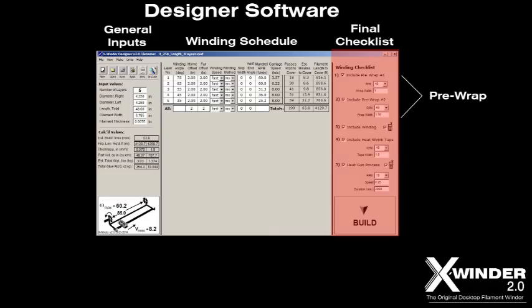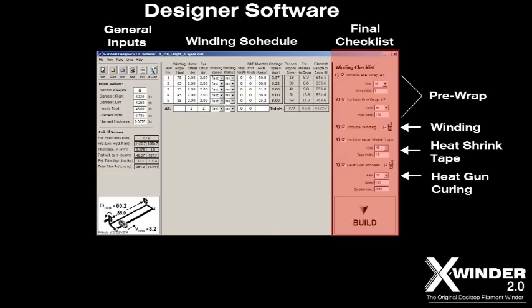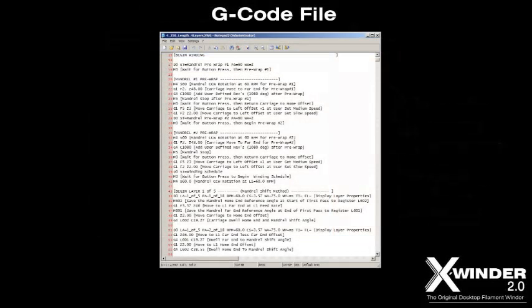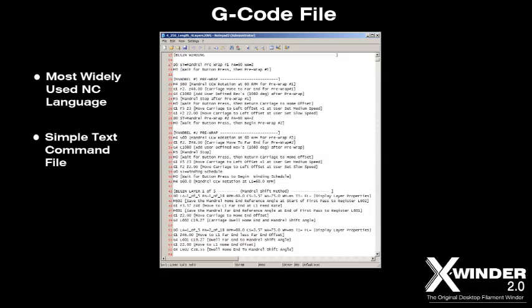The checklist includes two pre-wrap steps if desired, the winding schedule itself, a heat shrink tape step to compress the part and squeeze out the excess glue, and a final heat gun curing process if desired. The designer then creates and outputs the G-code file. G-code is the most widely used language for numerically controlled manufacturing machines — a simple text file containing line-by-line build instructions, and it's open source by definition.